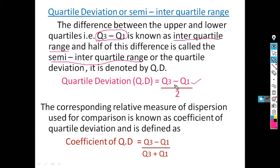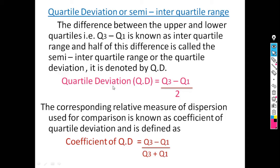The corresponding relative measure of dispersion used for comparison is known as the coefficient of quartile deviation, defined as: coefficient of quartile deviation equals (Q3 minus Q1) divided by (Q3 plus Q1), where Q3 is the upper quartile and Q1 is the lower quartile.